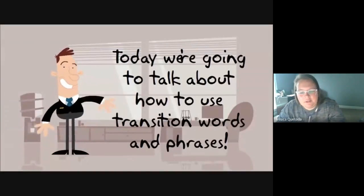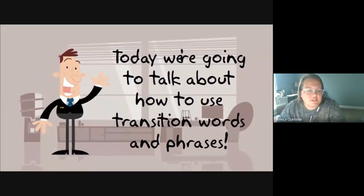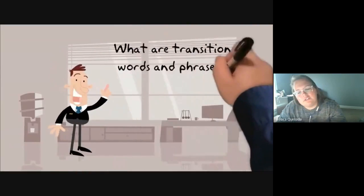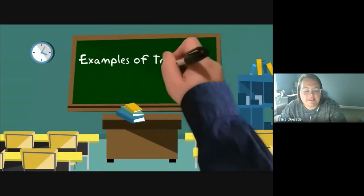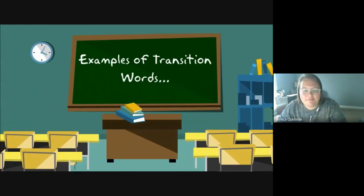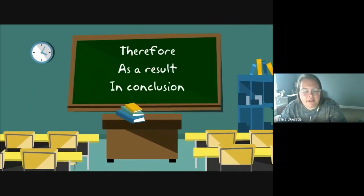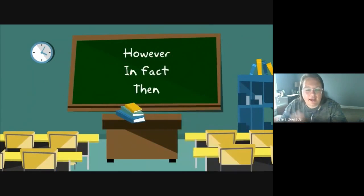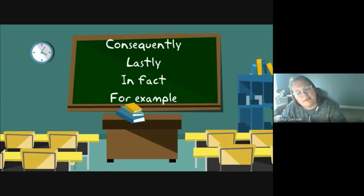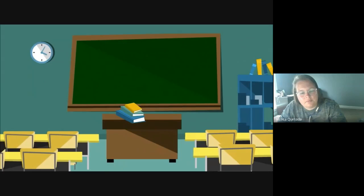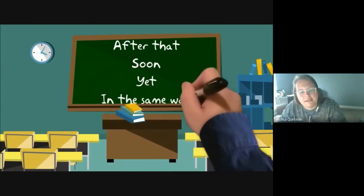Alright, I think we're good now. Today we're going to be talking about how to use transition words and phrases. These are words that help ideas and writing to flow. Examples of transition words include: therefore, as a result, and in conclusion — as well as in the same way.